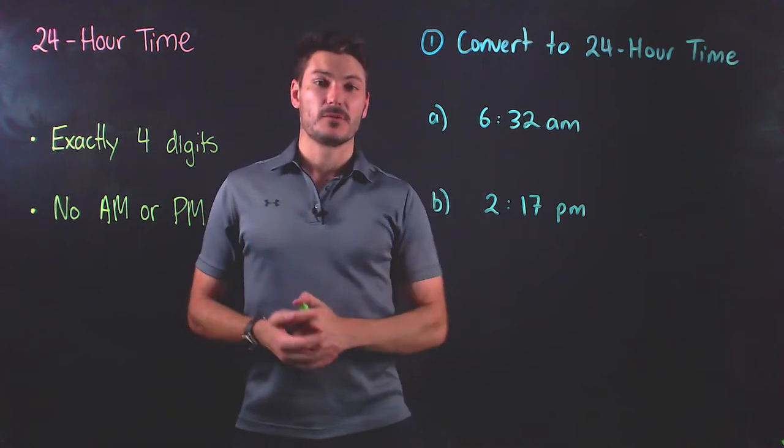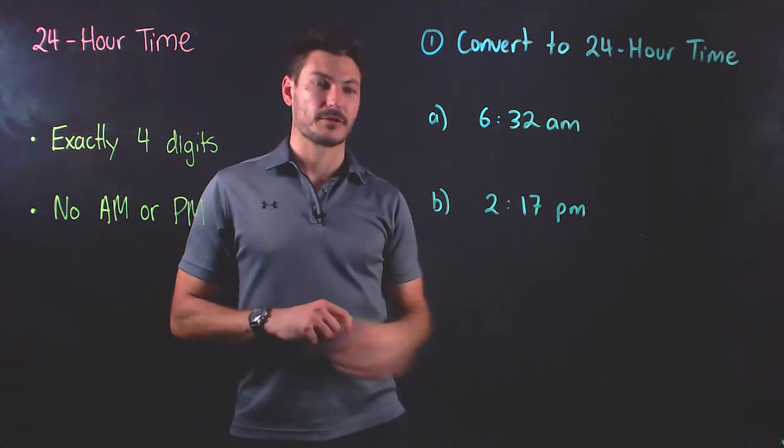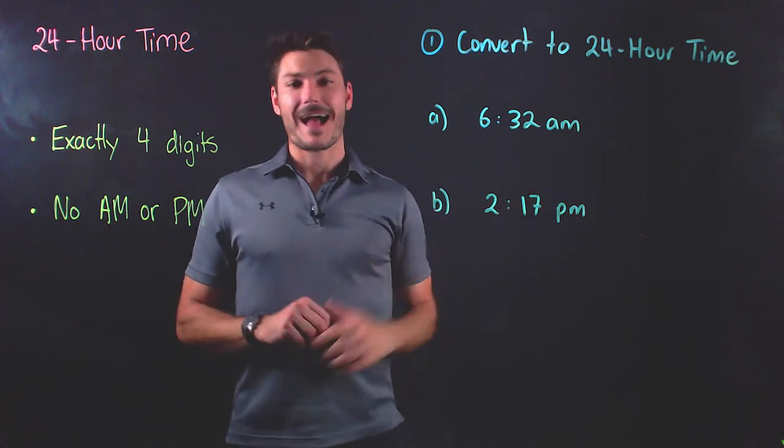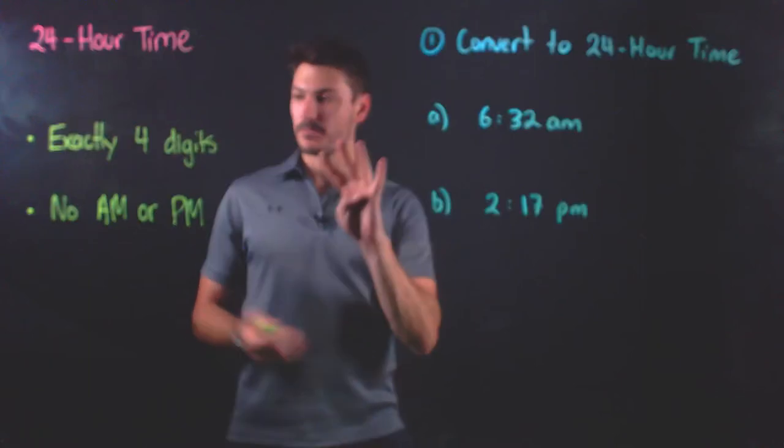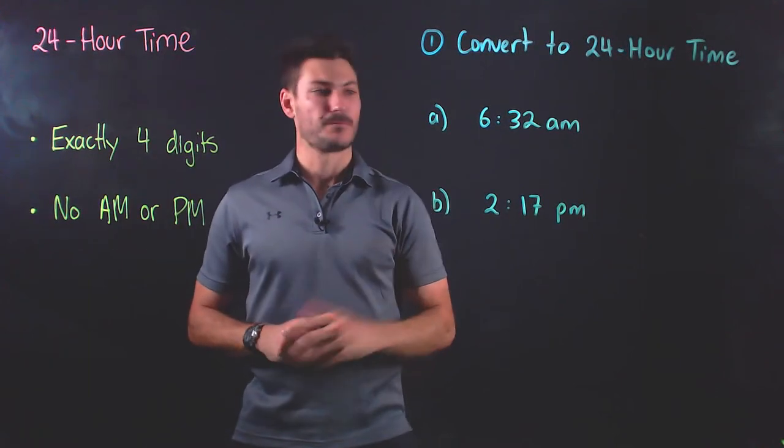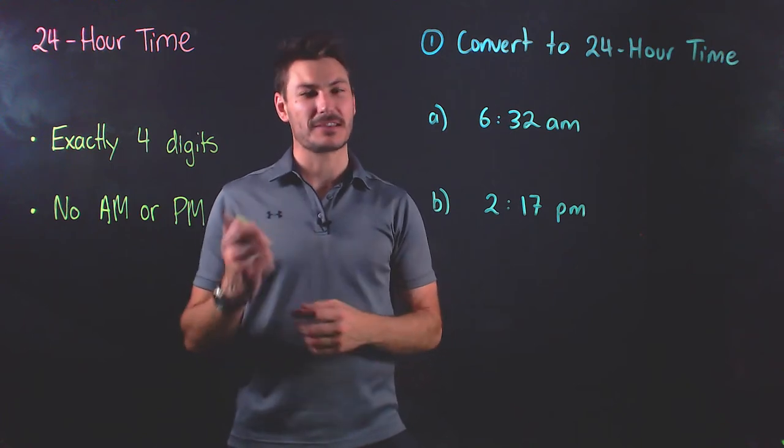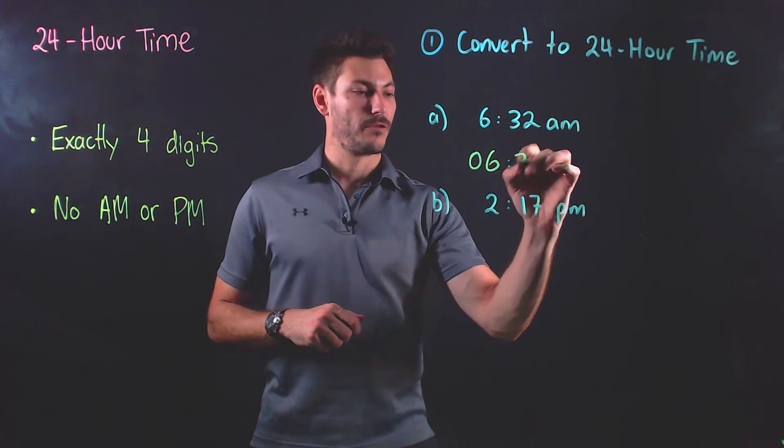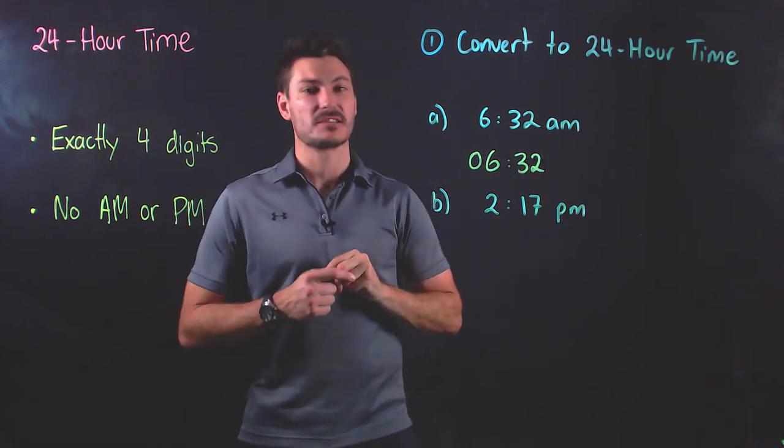So I'm gonna get straight into it and give you a couple of examples. Converting to 24-hour time from our normal a.m. and p.m. system, if you've got an a.m. time, the 24-hour version is exactly the same except it must be exactly four digits long. So notice that we've only got three digits here. If that's the case, you just add a zero in front. So I'm gonna get 0632. That's the time in 24-hour time.